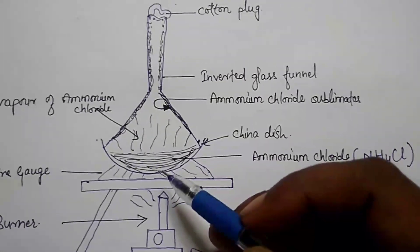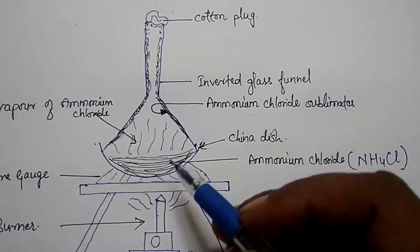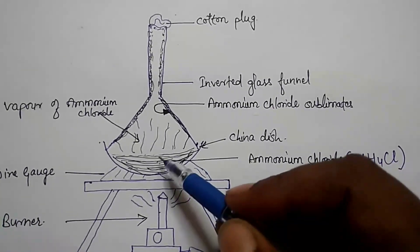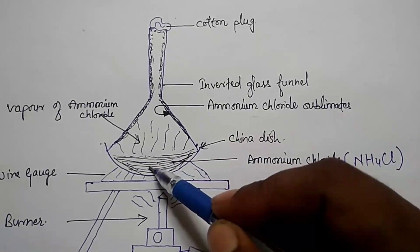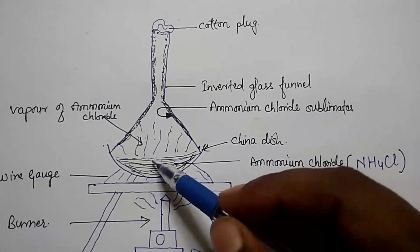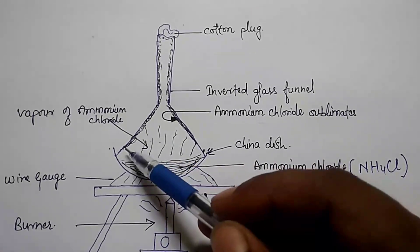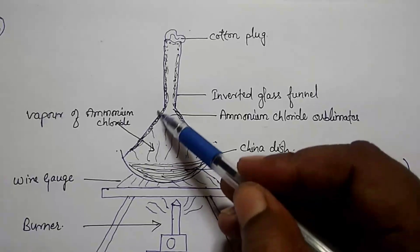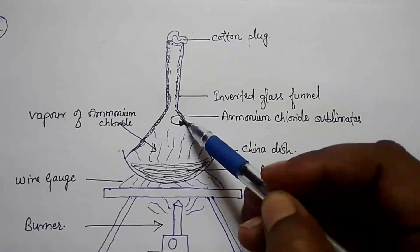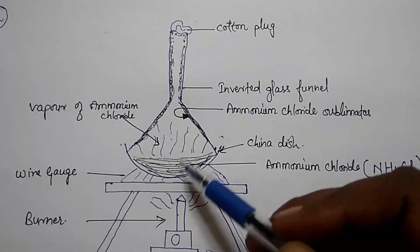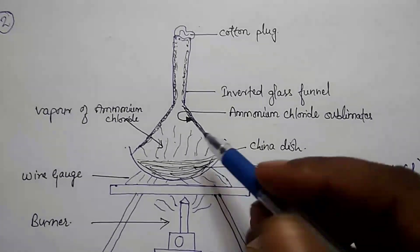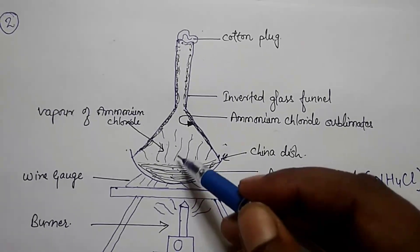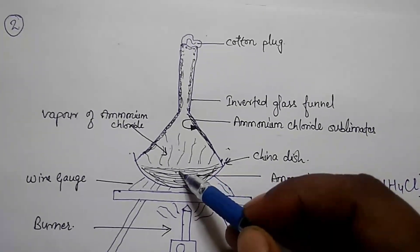On heating, we observe that the ammonium chloride in the china dish changes into white vapors. These vapors rise up and get converted into solid ammonium chloride on coming in contact with the cold inner wall of the funnel. When we give heat, it directly breaks the force of attraction between the particles of ammonium chloride, and this solid directly changes into vapor form.